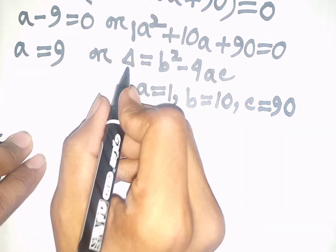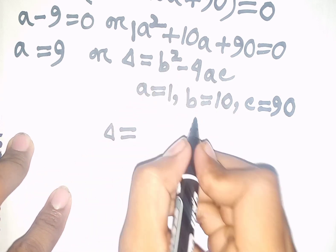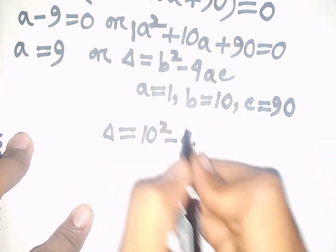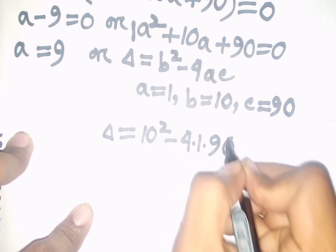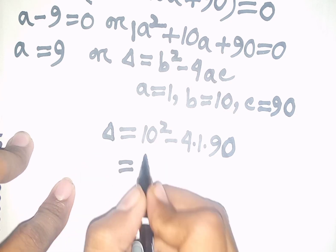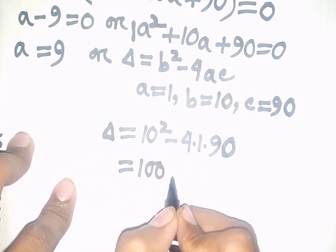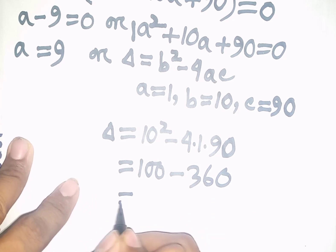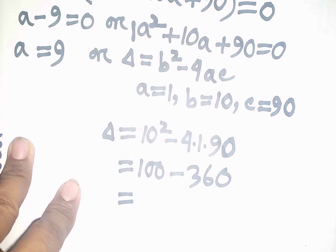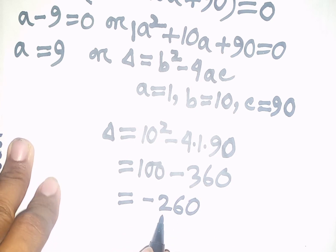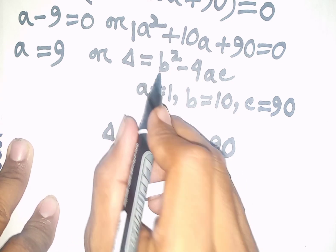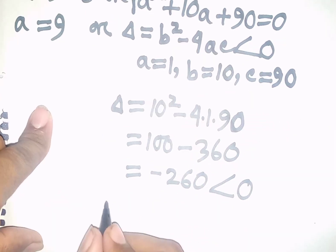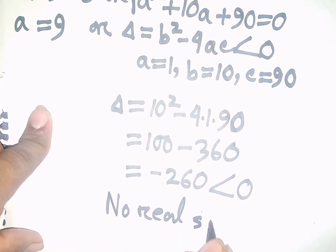So we can write delta = b² minus 4ac, that means 10² minus 4 × 1 × 90, which equals 100 minus 360, that means minus 260. Since minus 260 is less than 0, b² - 4ac is less than 0. So there is no real solution from the quadratic factor.